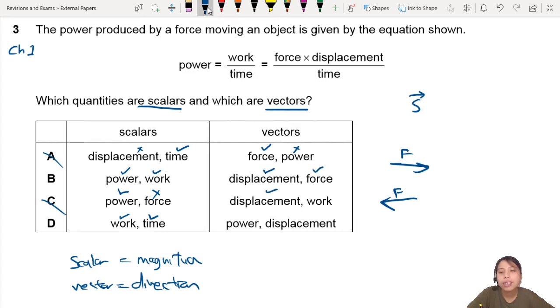Force is a vector, displacement is a vector. Work is not. Power is not. Displacement to the east. Yes, correct. So the answer that is best is B for this case.